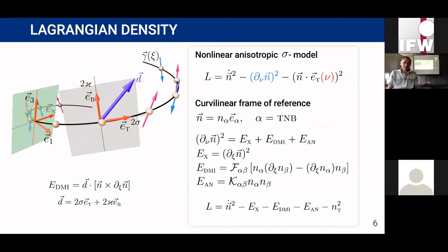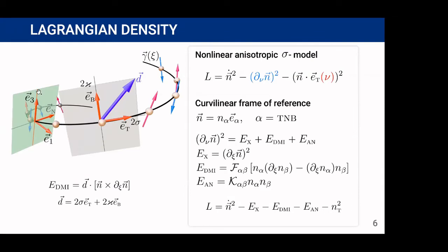Thus, the intrinsically achiral curvilinear antiferromagnet behaves as a chiral helimagnet with geometrically tunable Dzyaloshinskii-Moriya interaction and biaxial anisotropy with hard axis along E1.